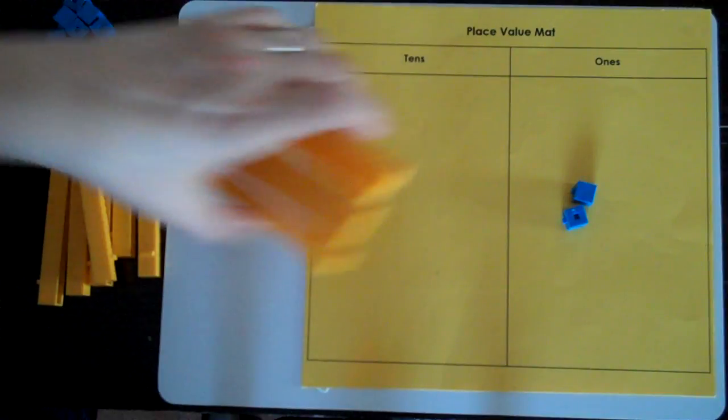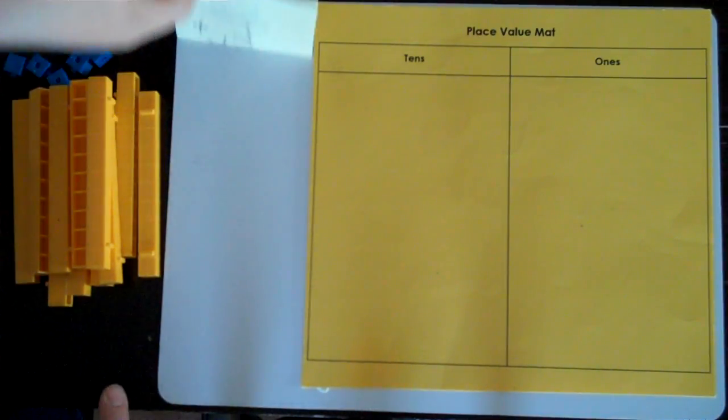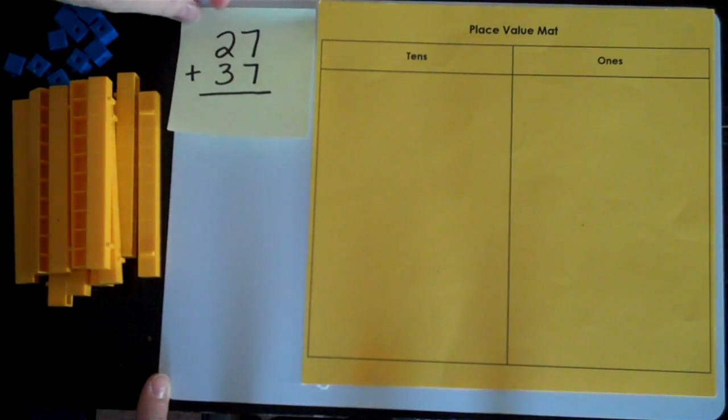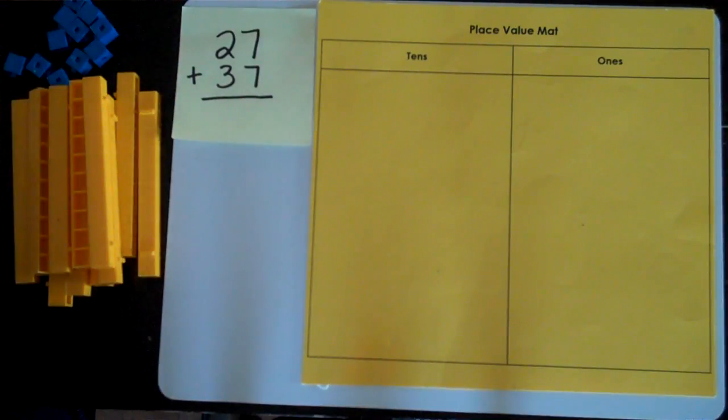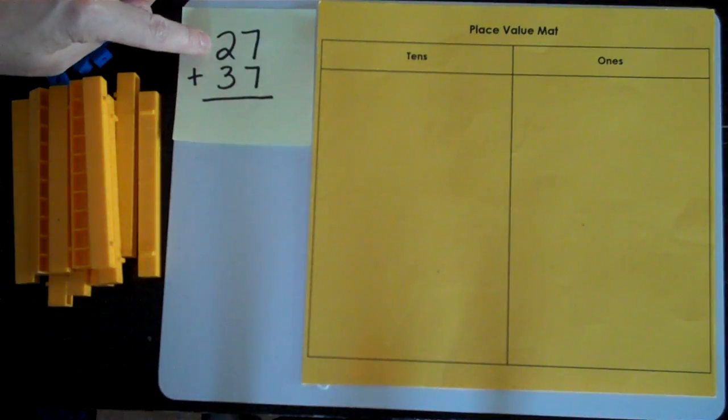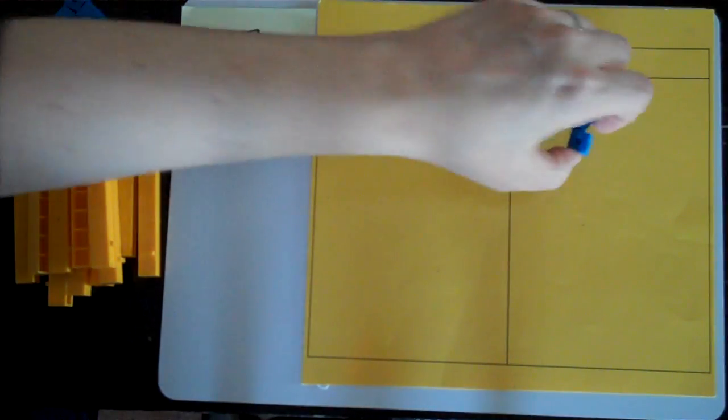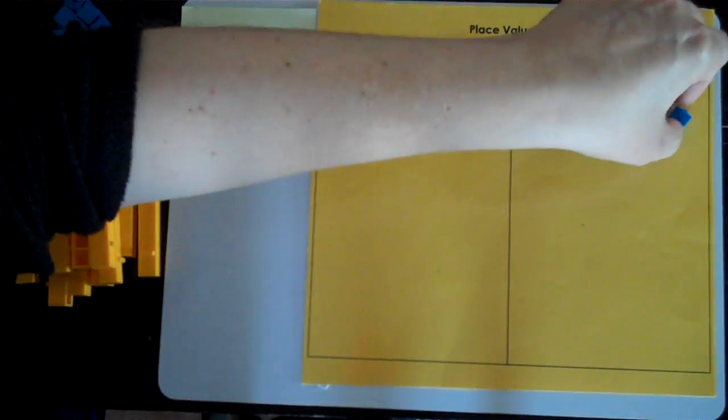First thing I need to do is clear off my place value mat. I'm now ready for a bit of a trickier question. 27 plus 37. I always want to start with the ones place. So the first number is 27. I need seven ones. Two, four, six, seven.